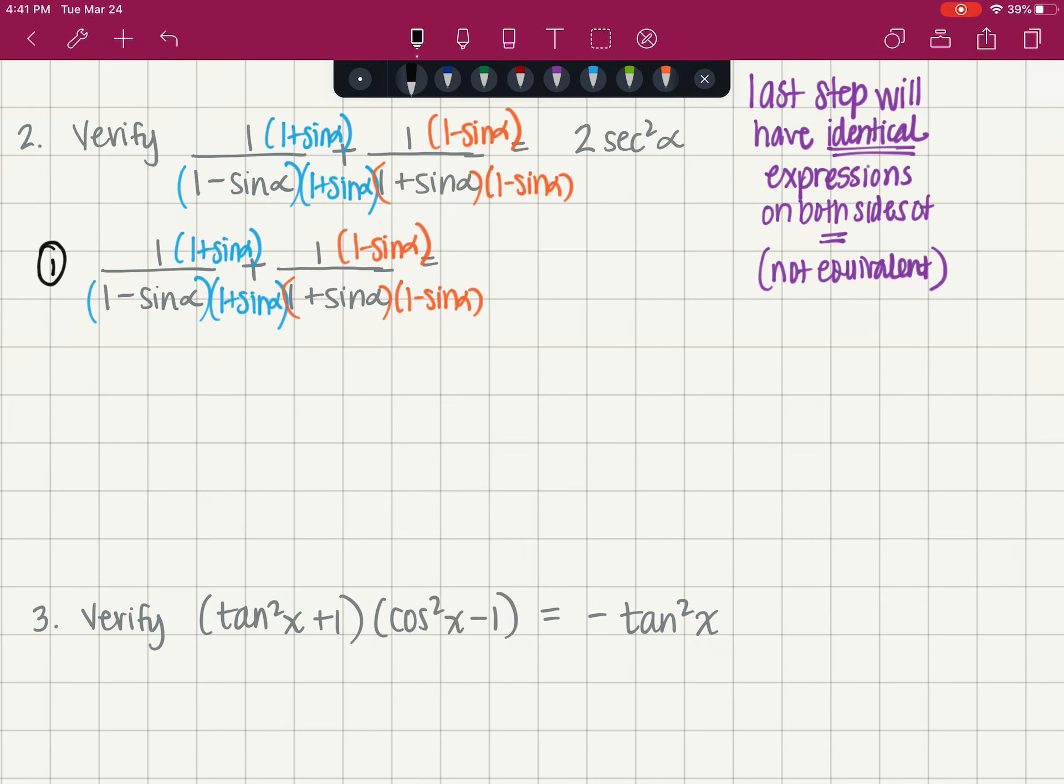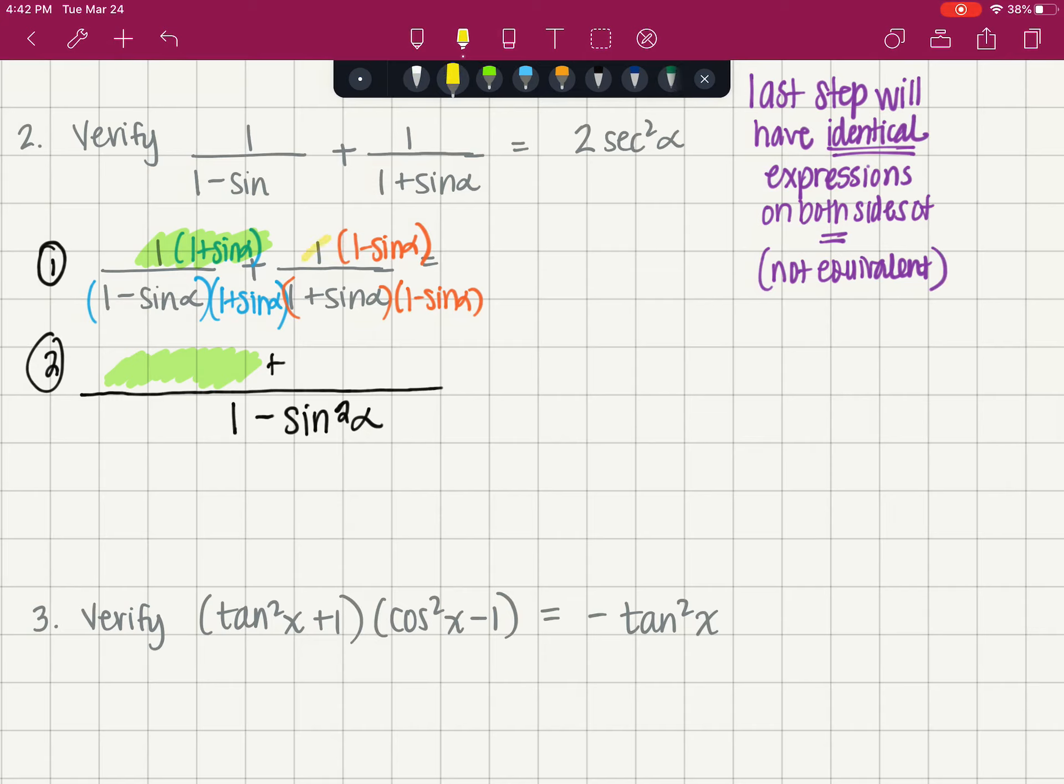I'm going to write this all over one denominator. So that one denominator is one minus sine of alpha times one plus sine of alpha, which is one minus sine squared of alpha, because those are conjugates. The first numerator is going to go here, and then we have a plus sign, and then the second numerator is going to go right here.